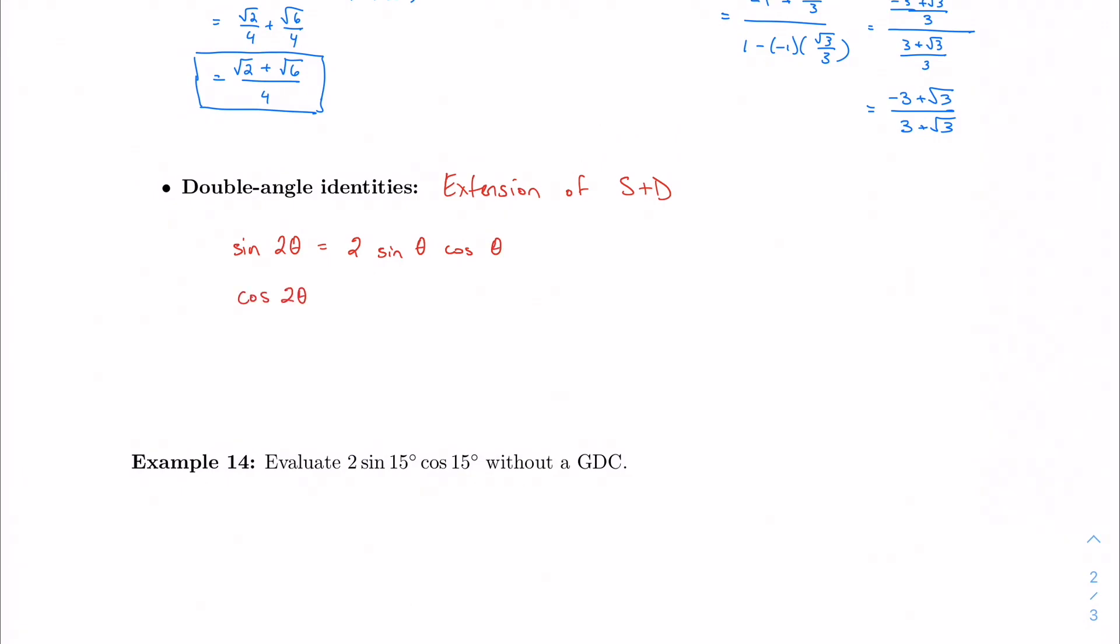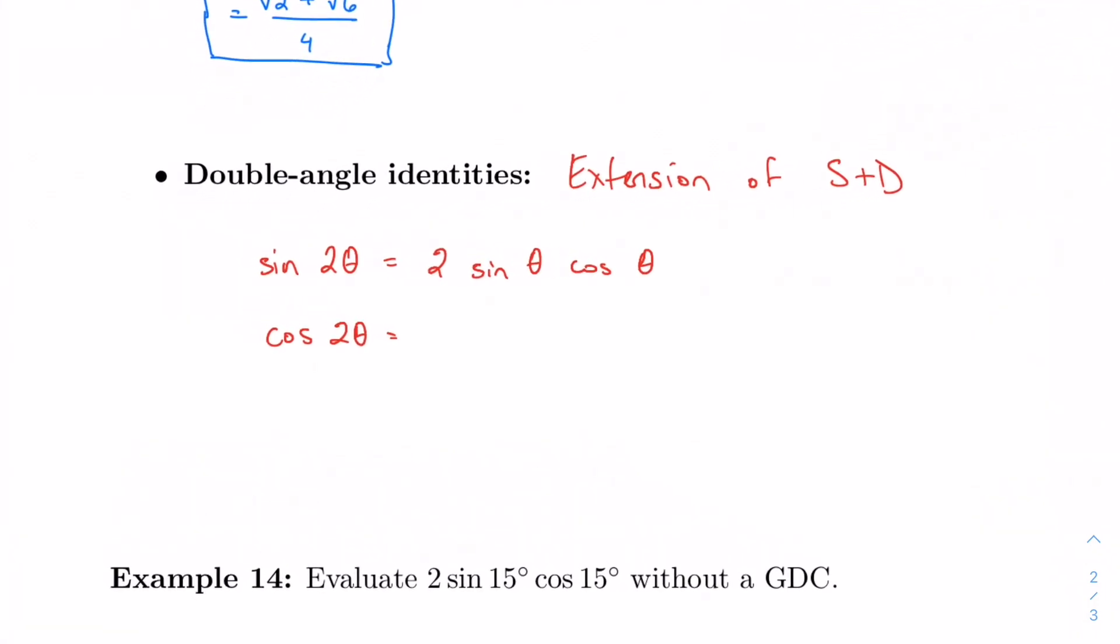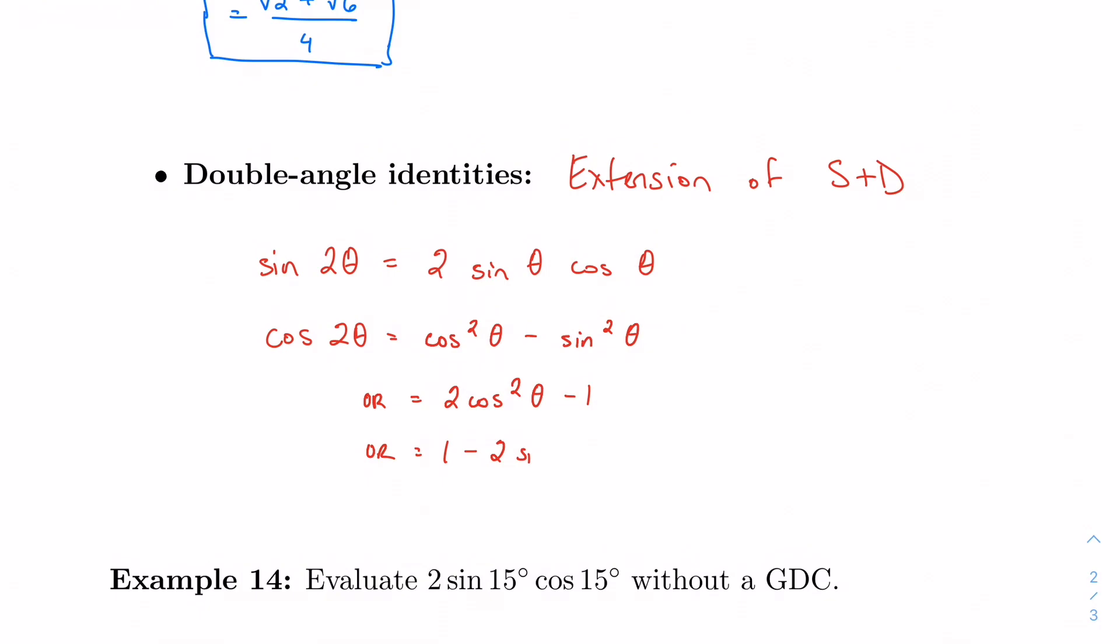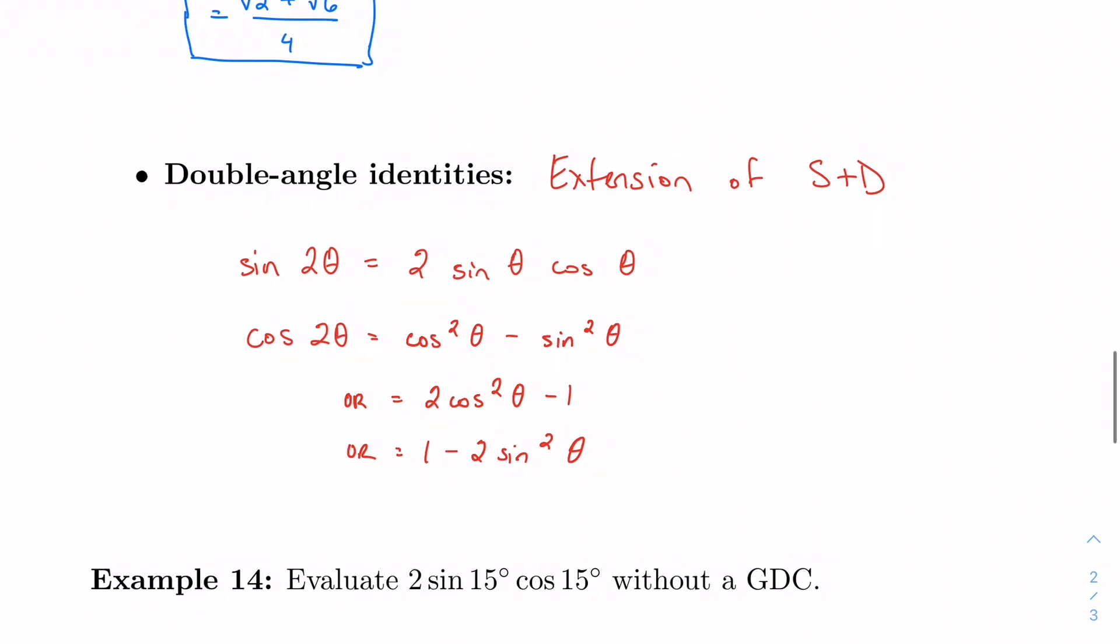For cosine 2 theta, we actually have a few that we can use. The one based on the sum and difference formulas is cosine squared theta minus sine squared theta. But by our Pythagorean identities, I have a couple other forms that I can use that are just as important. And you can prove these on your own if I want. Maybe I'll ask you to do this on a test or something. But we also have these as options for cosine 2 theta as well. Both do come in handy. All three come in handy. You should be ready to use them.